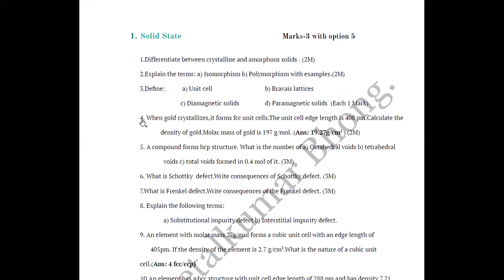Then a numerical: when gold crystallizes it forms FCC unit cells. The unit cell edge length is 408 picometers. Calculate the density of gold. The molar mass of gold is given as 197 grams per mole. The answer is 19.27 grams per cm³.